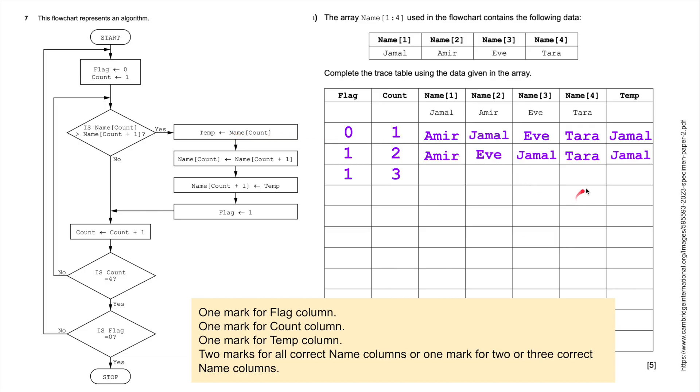Is count, so we go to the next pairing, these two here, name two and name three. Is count greater than count plus one? So is Jamal greater than Eve? Well, J is higher up the alphabet than E, so let's have a little look at this. Leave Amir alone. And Eve and Jamal are going to get swapped. The temp value again is in name count, so Jamal goes in there, Tara goes in here. And I've rushed ahead of myself a little bit. Flag has been assigned the value one, and count, count plus one. So we're going back again. So we're going to compare now the last two.